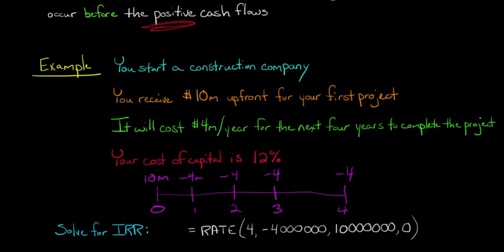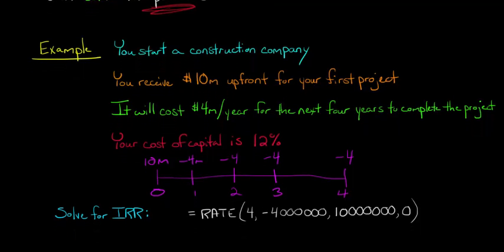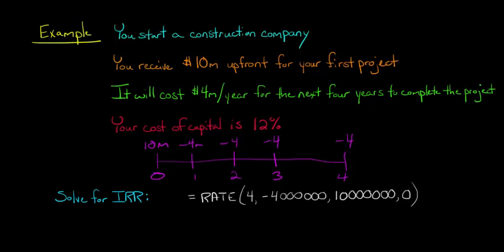So let's take a look at what the IRR would be. So I actually used Microsoft Excel, and I just used the following formula, equals, and then rate, and then I have here the 4 for the 4 periods, and then I have here the negative 4 million, and then I have here the 10 million you receive up front, and then the 0 at the end. So you don't have to use this.